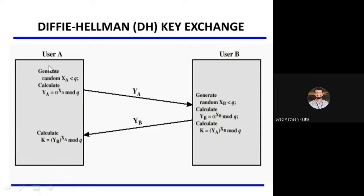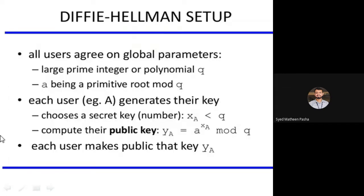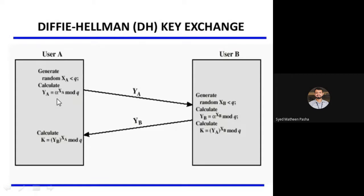There is one user A and user B. User A generates a random XA which should be less than Q, then calculates public key YA = A^XA mod Q and sends YA to Bob. User Bob, once he receives YA, assumes some value for XB which should be less than Q and calculates YB = A^XB mod Q.